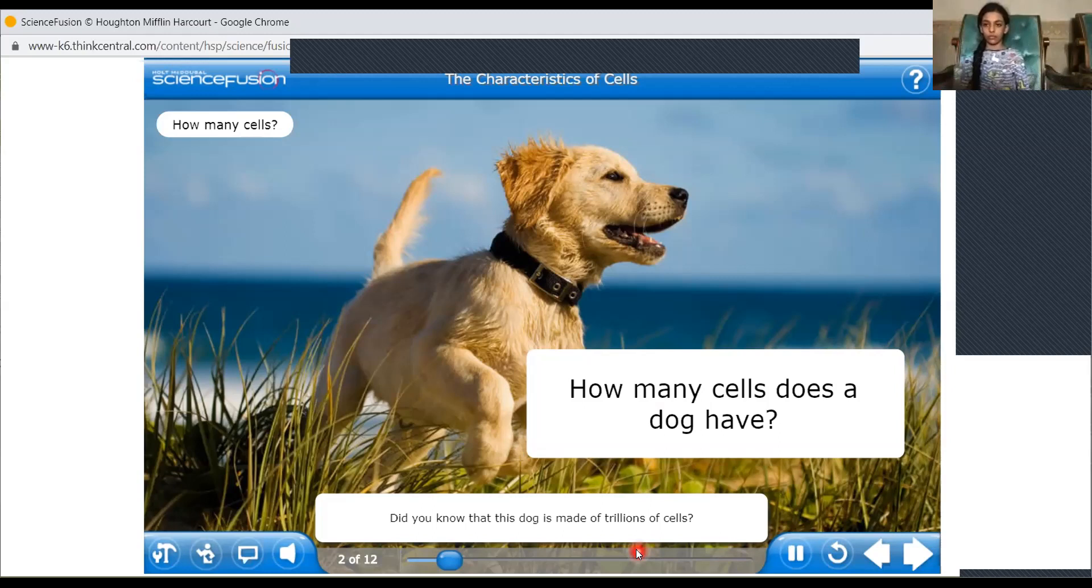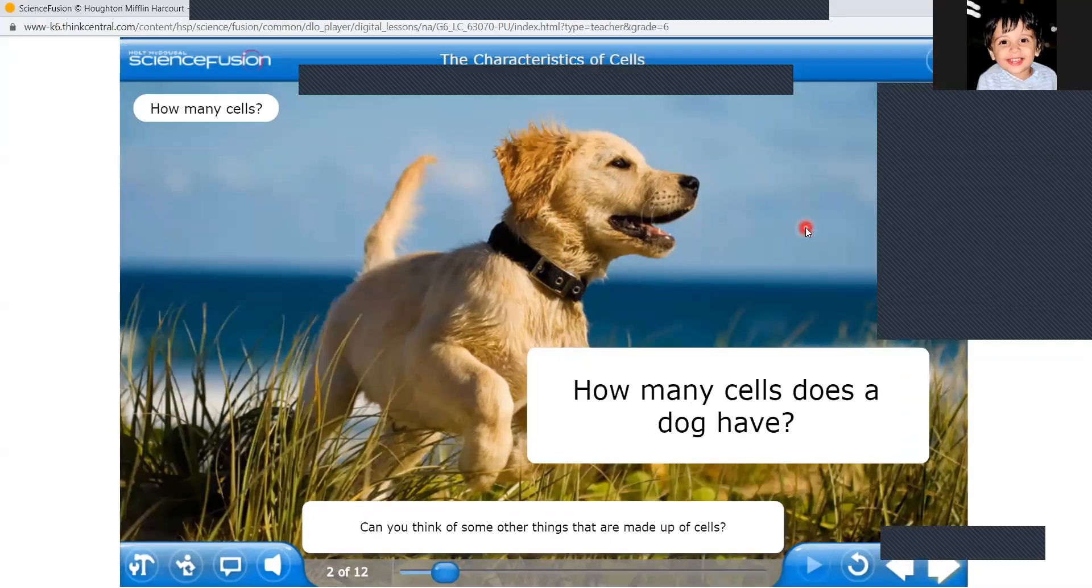Did you know that this dog is made of trillions of cells? These cells are really, really small. You need a microscope to see them. Can you think of some other things that are made up of cells? Tell me, girls. Can you tell me things which are made up of cells? Can you hear now or no? Did you hear any video?